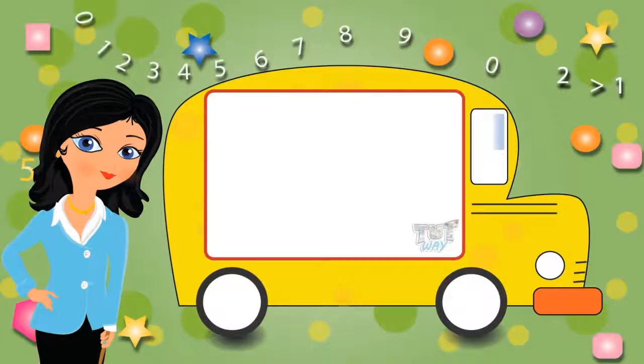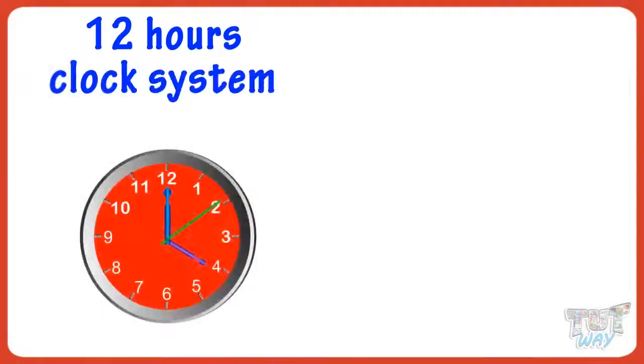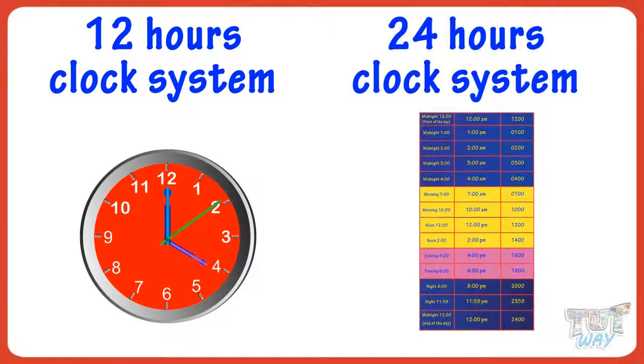Hi kids! Today we will learn about two types of clock systems: the 12-hour clock system and the 24-hour clock system.